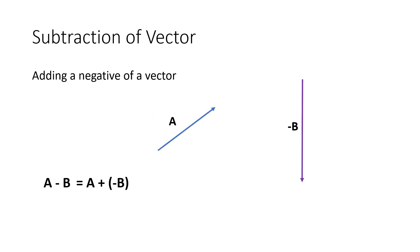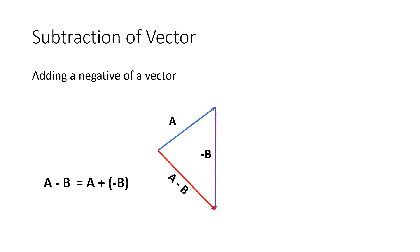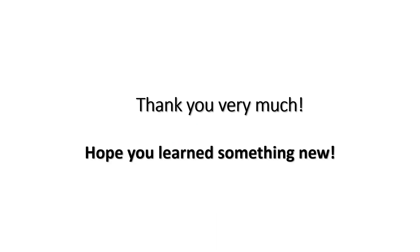All we have to do now is add vector A with negative B. This is our vector A, and then we connect the negative B vector, and then we connect the initial point of vector A with the endpoint or arrowhead of negative B. This will be now our resultant vector. We call this A minus B. To get the direction, we get the reference angle — the acute angle formed by our resultant vector and the x-axis. Thank you very much. Hope you learned something new from this video lesson. See you next time.